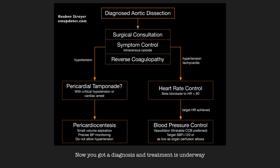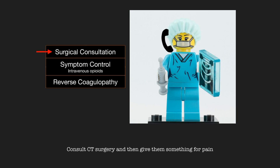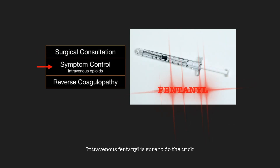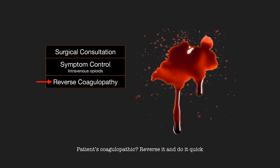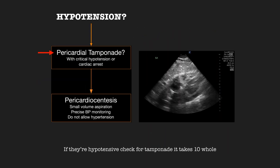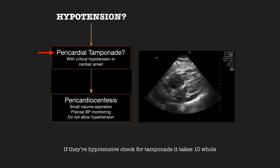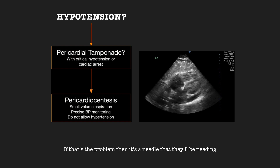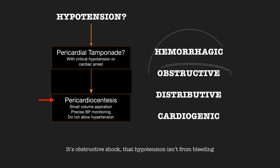Now you got a diagnosis and treatment is underway. Consult CT surgery and then give them something for pain. Intravenous fentanyl is sure to do the trick. Patient's coagulopathic — reverse it and do it quick. If they're hypotensive, check for tamponade — it takes ten whole seconds, and if you checked before, you should check again. If that's the problem, then it's a needle that they'll be needing. It's obstructive shock — that hypotension isn't from bleeding.